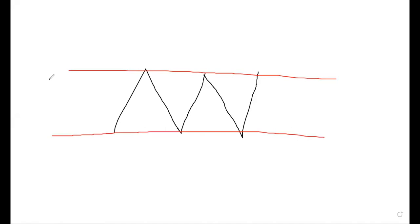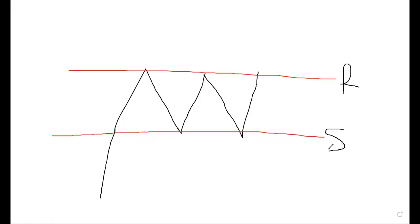One important thing you must always note about support and resistance is that support and resistance always have two major swings. The resistance is the upper bar you draw here, while the support is the lower bar. You must always note this resistance and support.